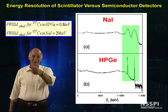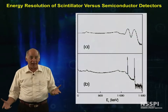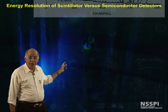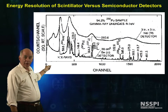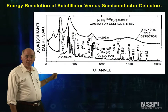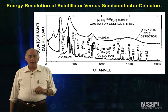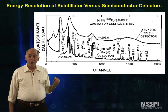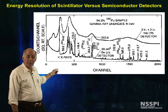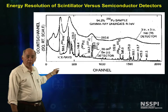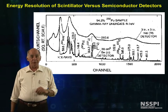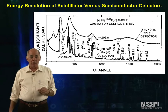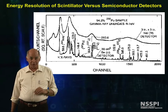This is why we pay the money. What sodium iodide smears out beyond recognition, high purity germanium resolves into individual peaks. We can go and identify minor constituents in a material that we can only dream of when using scintillators.